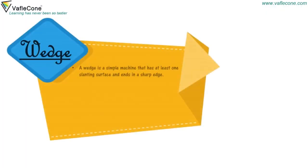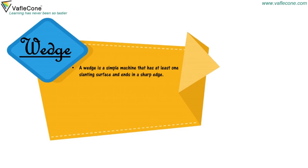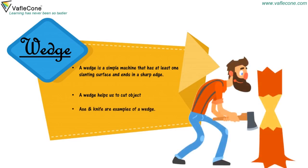A wedge is a simple machine that has at least one slanting surface and ends in a sharp edge. A wedge helps us to cut objects. Axe and knife are examples of a wedge.